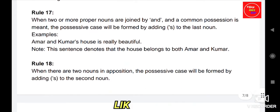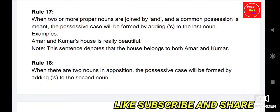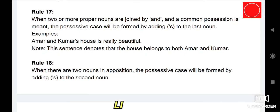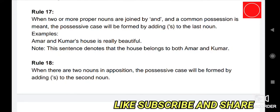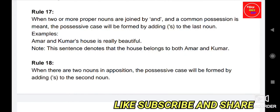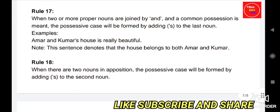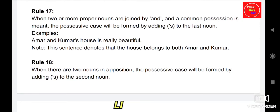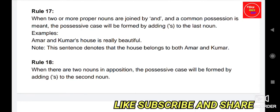Rule 17: When two or more proper nouns are joined by 'and' and common possession is meant, the possessive case is formed by adding apostrophe S to the last noun. For example, 'Amar and Kumar's house is really beautiful' — this means the house belongs to both Amar and Kumar.